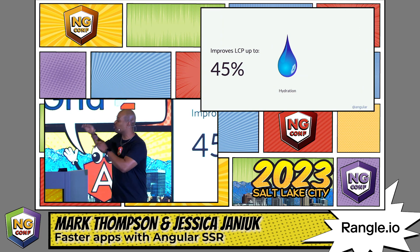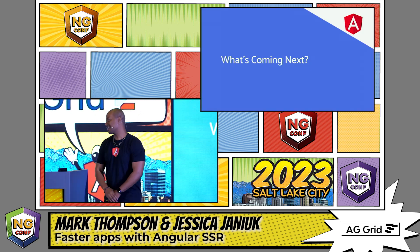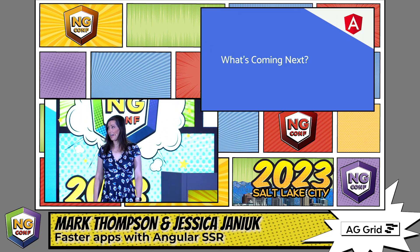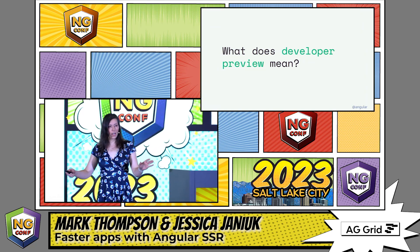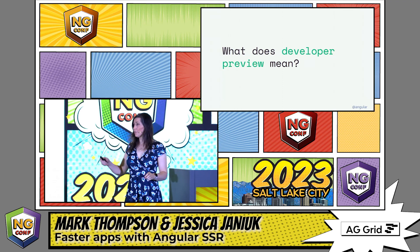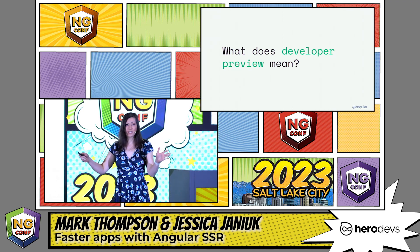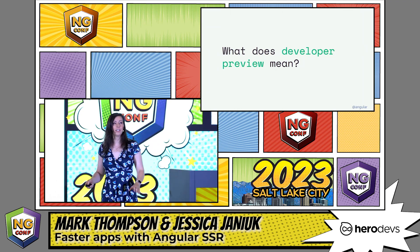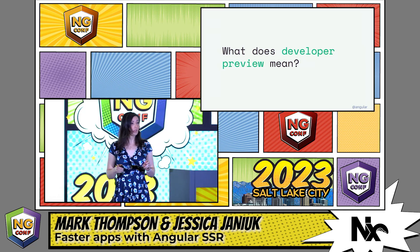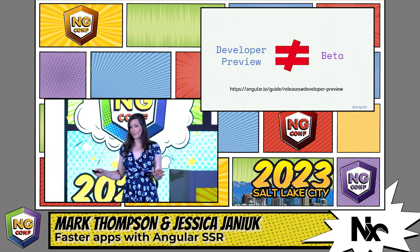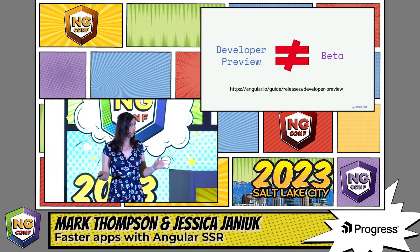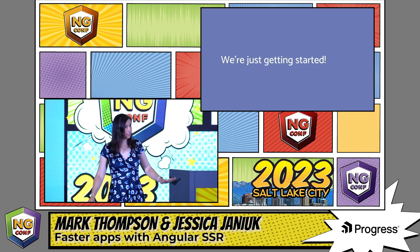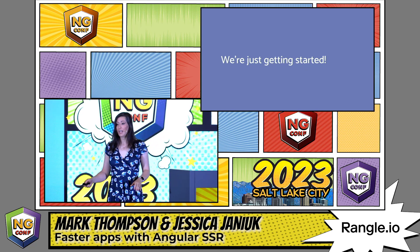Before we get to what's next, I want to make one call-out about what developer preview means. The developer preview means that a feature is fully functional and polished. It essentially just allows us the flexibility of not having to go through that full deprecation cycle if we need to make a breaking change to the API. It is definitely closer to stable — it is definitely not the equivalent of beta. Think of it as pre-stable more than anything else. There are actually already applications using hydration in production right now with really great results. The architecture we put in place for hydration is a really solid foundation to build on, and it will enable more granular hydration down the road.